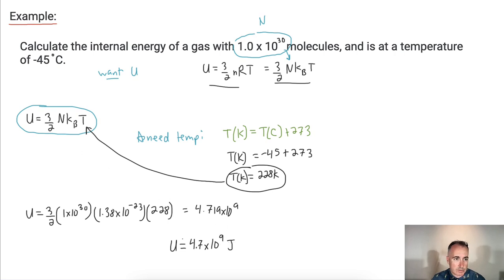I'm probably allowed two significant figures here. So I'll say approximately equal to 4.7 times 10 to the 9 joules. Of course, I can call these gigajoules if I wanted to. There's the internal energy of this gas.